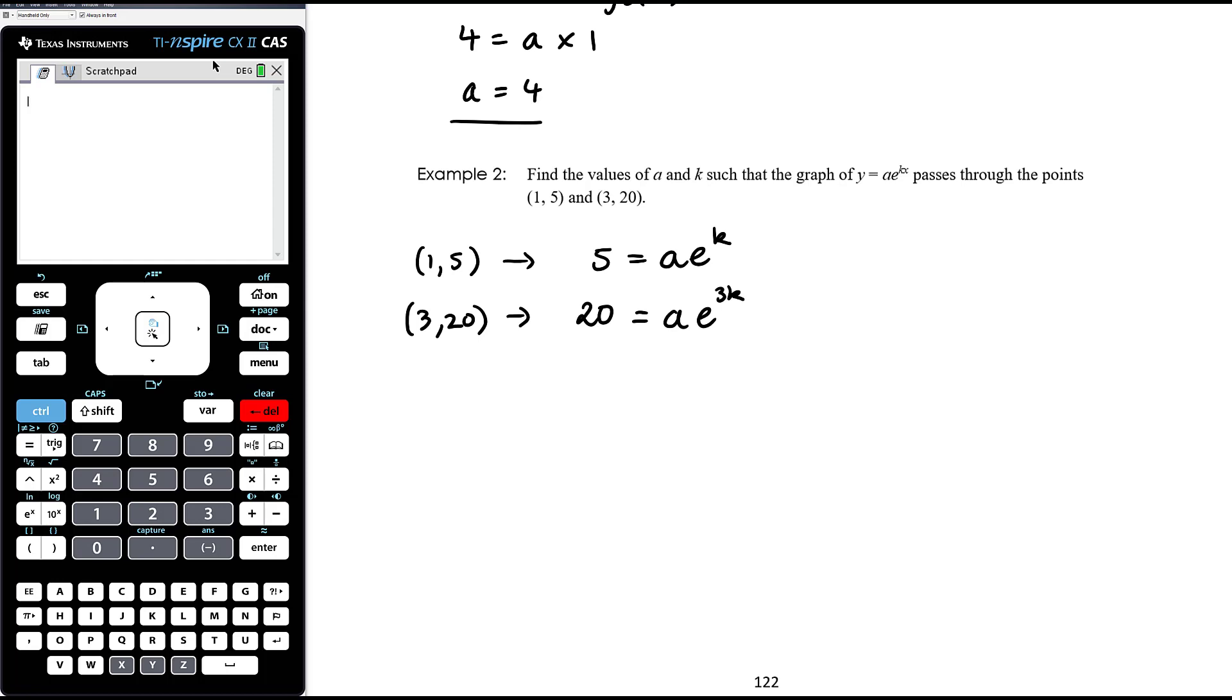OK, now we've got two simultaneous equations to solve simultaneously. You can use substitution, rearrange one of these to make a the subject, which is pretty easy. So for example, this would mean that a is 5 over e to the k or 5e to the negative k, however you want to write it. And then subbing that in here, perfectly fine. We can actually also use elimination. And we can use elimination not by adding or subtracting the two equations, but by dividing the two equations. So if we were to do equation 2 divided by equation 1, we're going to get 20 divided by 5 equals ae to the 3k divided by ae to the k and the a's cancel out. So we eliminate a. So 20 divided by 5 is 4 and e to the 3k divided by e to the k index laws say we subtract the powers. And so that's e to the 2k.